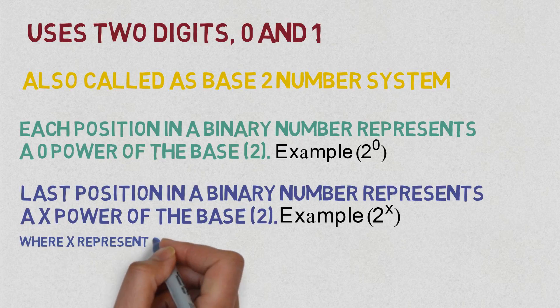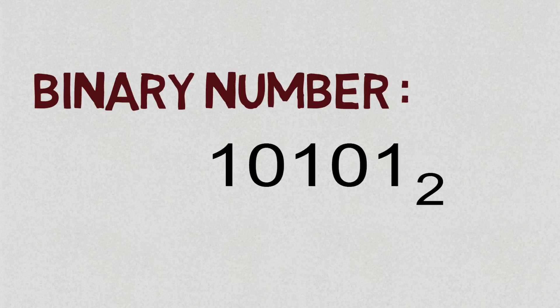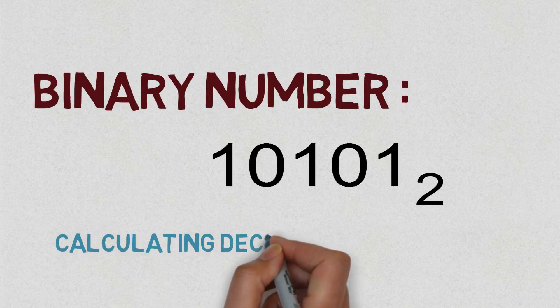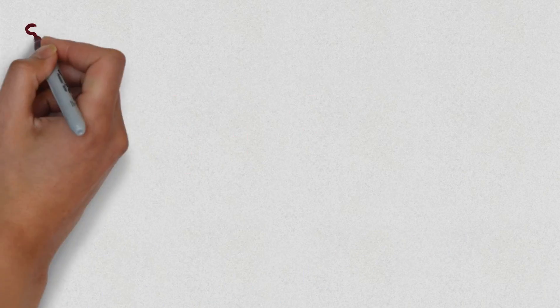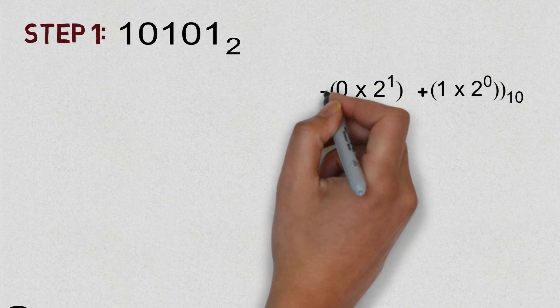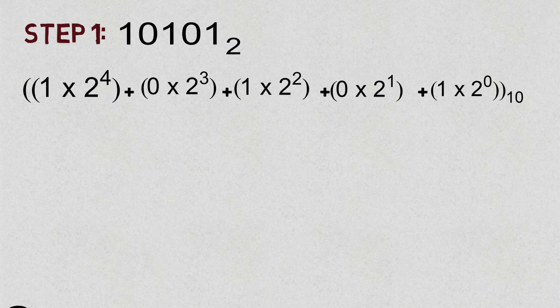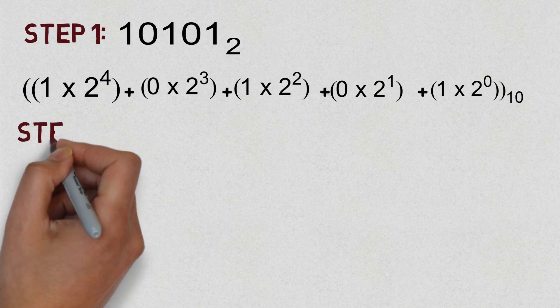For example, we will look at the binary number 10101 base 2 and calculate its decimal equivalent. Starting from the rightmost part: 1×2⁰, then 0×2¹, then 1×2², then 0×2³, and the last digit is 1×2⁴. We denote this as base 10 because we are converting to the decimal equivalent.